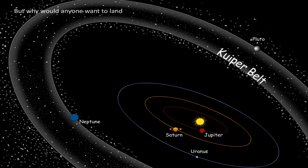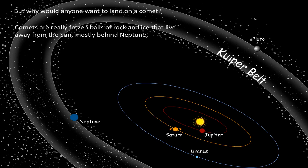But why would anyone want to land on a comet? Comets are really frozen balls of rock and ice that live away from the Sun, mostly behind Neptune in a place called Kuiper Belt.